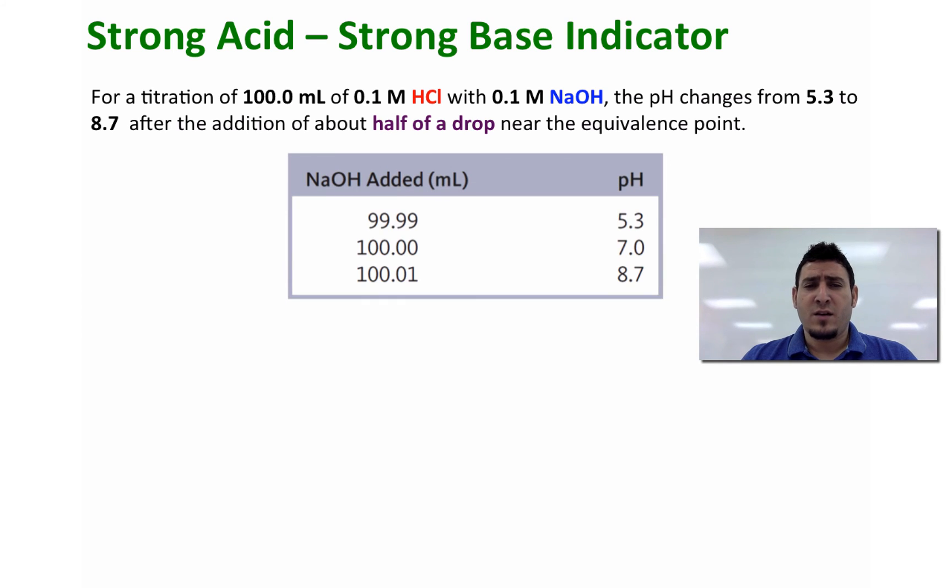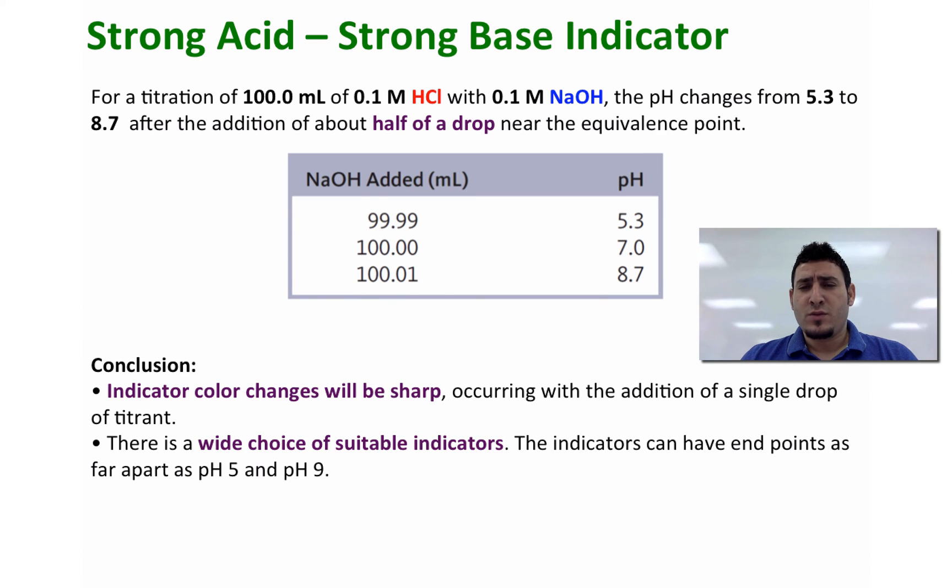So as you can see here, by adding half a drop of the base, the pH changes from 5.3 to 8.7. In conclusion, we can say that the indicator color change will be sharp, occurring with the addition of a single drop of titrant.